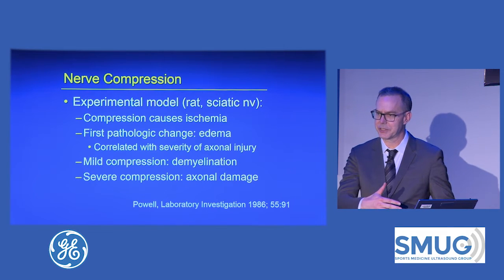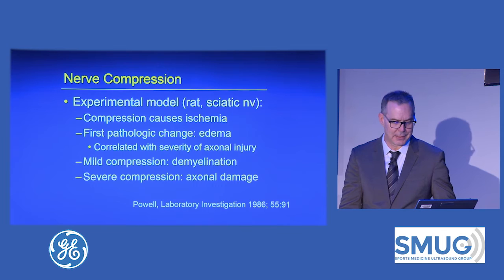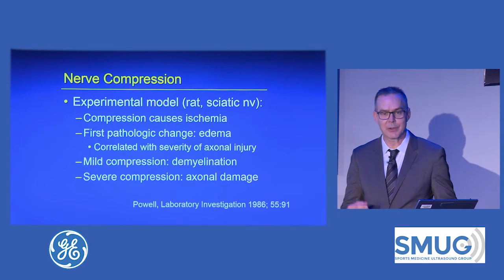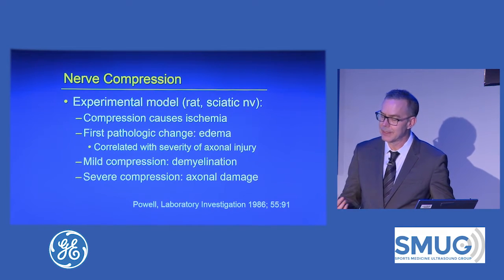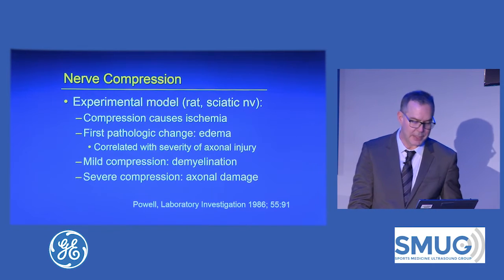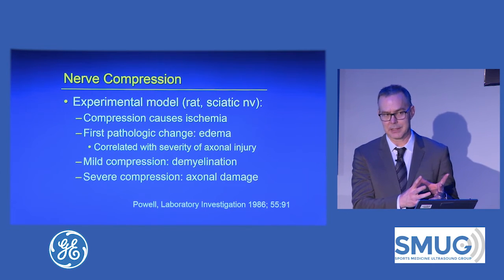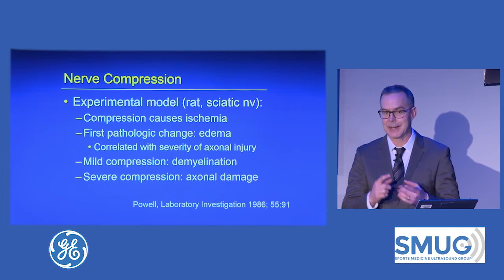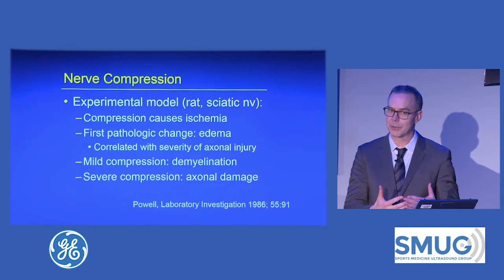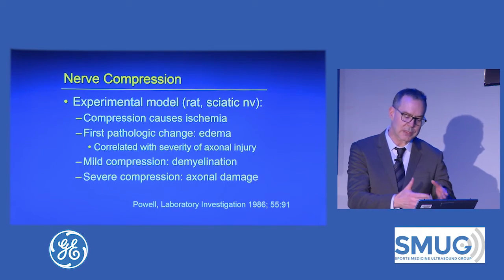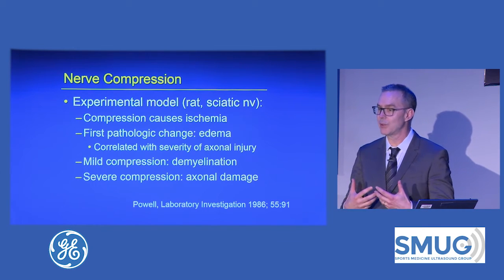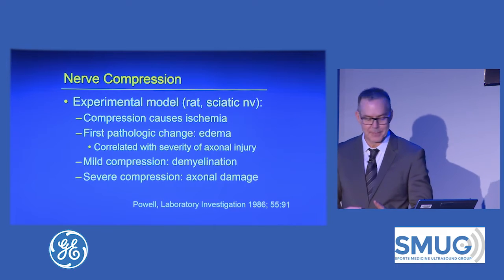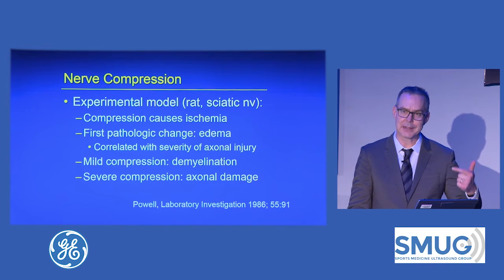We're trying to reevaluate what we're calling these conditions because we're going with newer treatments. All the things we call '-itis' — like tendonitis — are actually more tendinosis or tendinopathy after a week or so. Bursitis: most times when the bursa is distended, it's actually not inflamed. The same holds true with neuritis: unless you have leprosy or a true inflammatory situation, it's really edema from ischemia and then axonal damage.